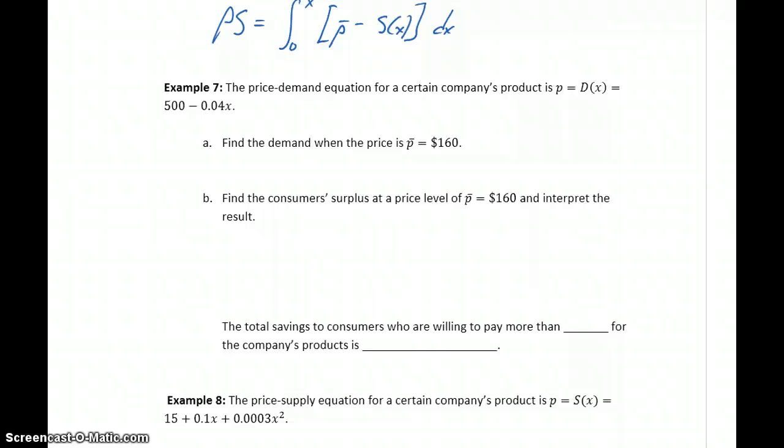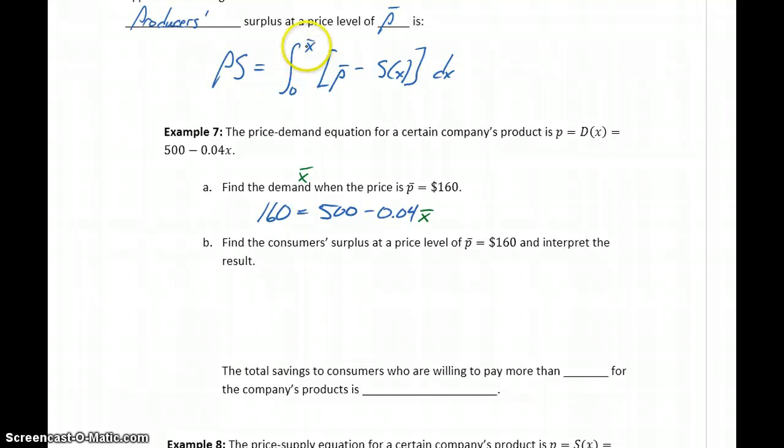We want to find the demand, so essentially we want to find our value for x bar whenever the price is P bar equals 160. So in order to find that, we're going to use this equation, P equals 500 minus 0.04x. We're going to substitute in the 160, which is our value for P bar. So that'll be equal to 500 minus 0.04 times x bar. When we solve for x here, we're getting that specific value of x bar that appears in each of those two formulas we just introduced. So we could solve that relatively simply or use Wolfram Alpha to take care of that, but this will give us a result of x bar equal to 8,500.